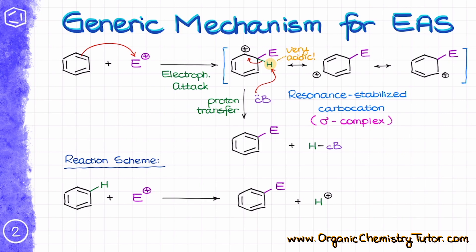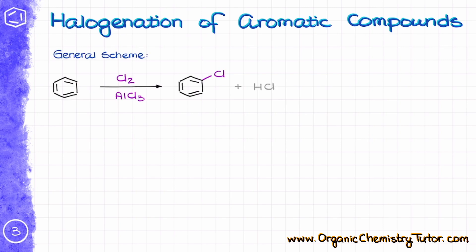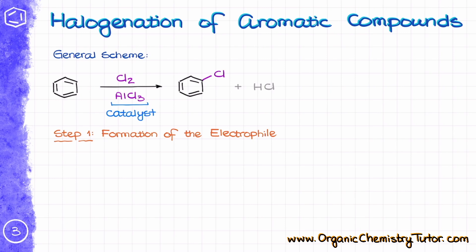Now let's look at the actual EAS reactions, starting with the halogenation reaction. In the general scheme we need a halogen — I'll be using chlorine here — and another species, aluminum chloride. Aluminum chloride is the catalyst needed to make a good electrophile; as a catalyst it will not be consumed in this reaction, so we'll have to make sure we regenerate it. The first step is the formation of our electrophile. While chlorine is electrophilic, it is not electrophilic enough to tackle the aromatic ring and disrupt aromaticity, so this is where aluminum chloride comes in.